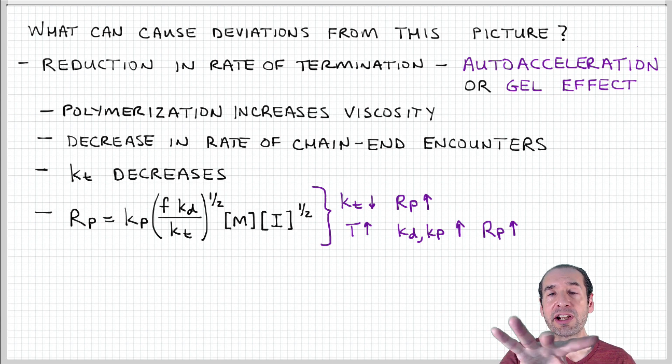Other mechanisms of termination become reduced, and so this decrease in these encounters with chain ends leads to a reduction in the rate of termination.